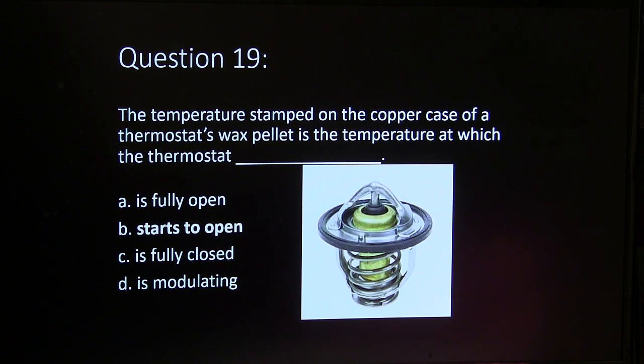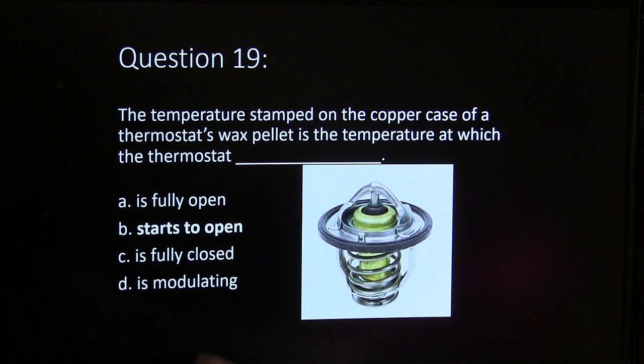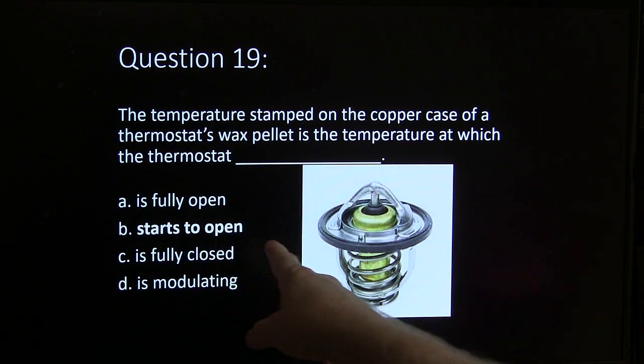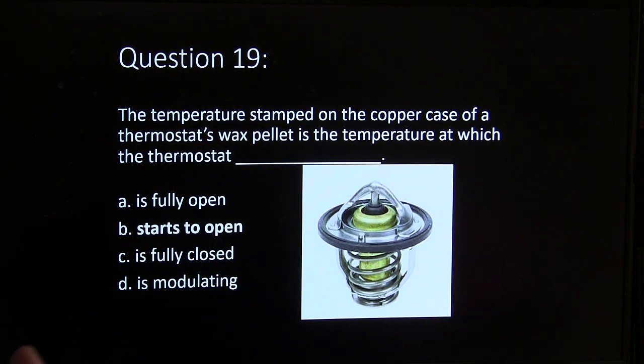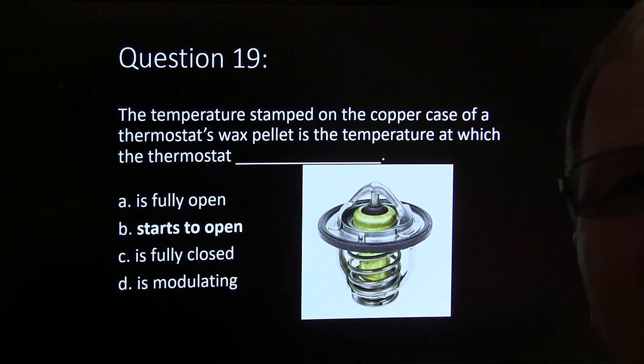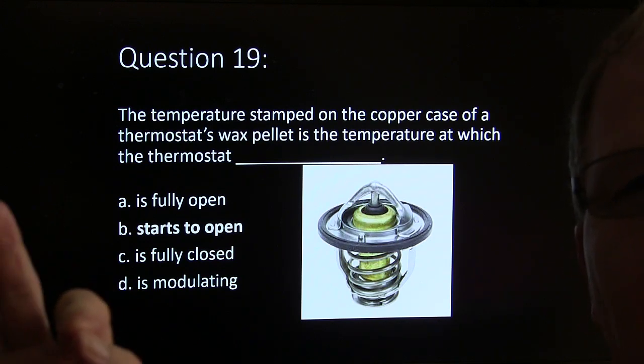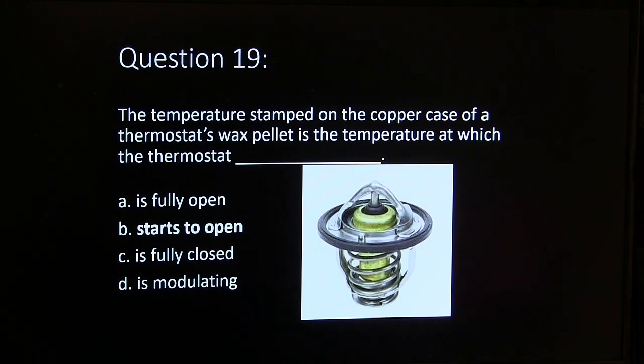The temperature stamped on the copper base of the thermostat's wax pellet — that's when it starts to open. If it says 196 degrees Fahrenheit, it's starting to open at that temperature.